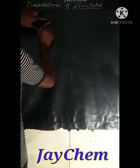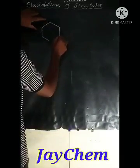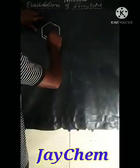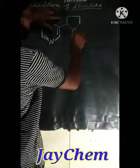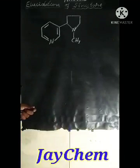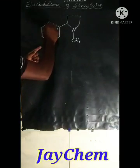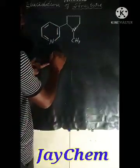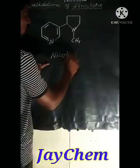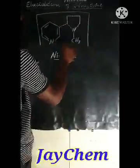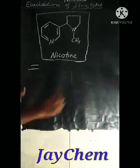Now, from all the above reactions, the correct structure of nicotine is established. It contains a pyridine ring and a pyrrolidine ring with a methyl group, two tertiary nitrogen atoms, and three double bonds. This is the correct structure of nicotine. Thank you.